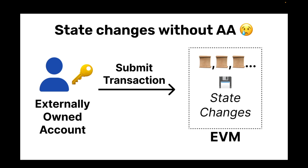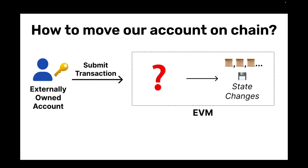To understand how all of these work together, let's look at a few illustrations. First, I want to point out what state changes look like today without account abstraction. For the most part, users hold on to their own private key, which submits a transaction — usually with some help from a wallet — onto the chain. Then you interact with a main smart contract, which will interact with several other smart contracts potentially, something like Uniswap calling out to ERC20 contracts, eventually making state changes if the transaction is successful.